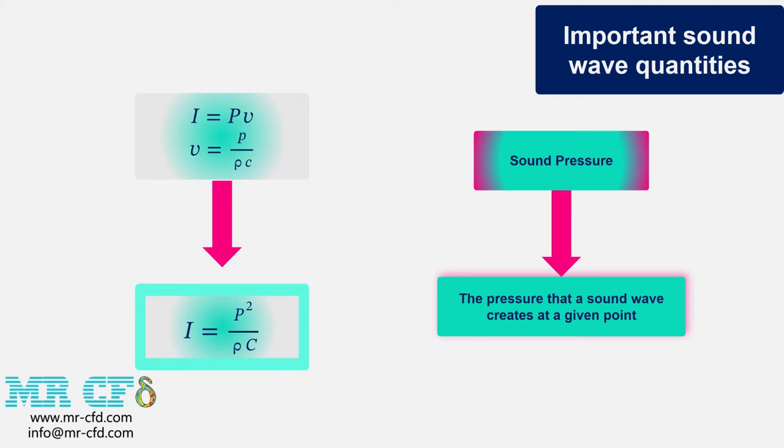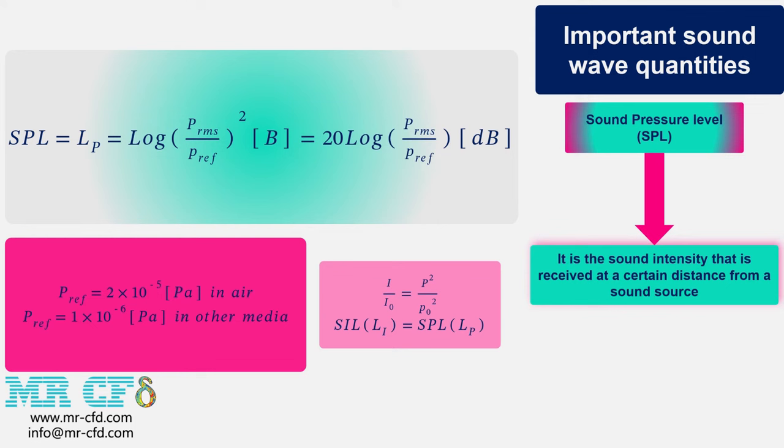Now, here we want to talk about sound pressure level. Sound pressure level or SPL is the sound intensity received from a sound source at a certain distance. In relation to the sound pressure level, the value for the P reference for air is different from other materials. These values for the P references are very important, because when you enter the software and want to activate the acoustics module, one of the items that must be set in the acoustic setting is the reference pressure.